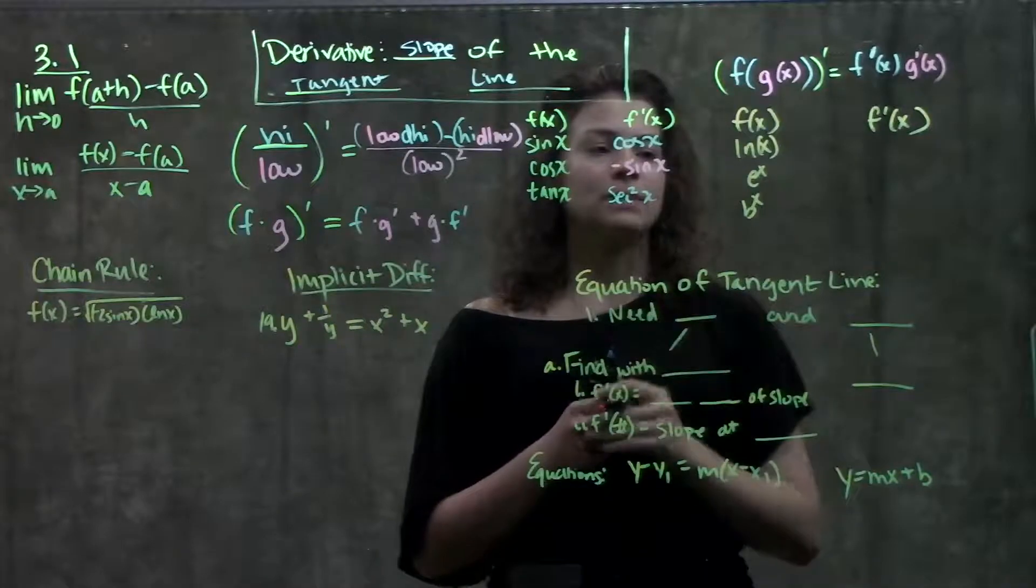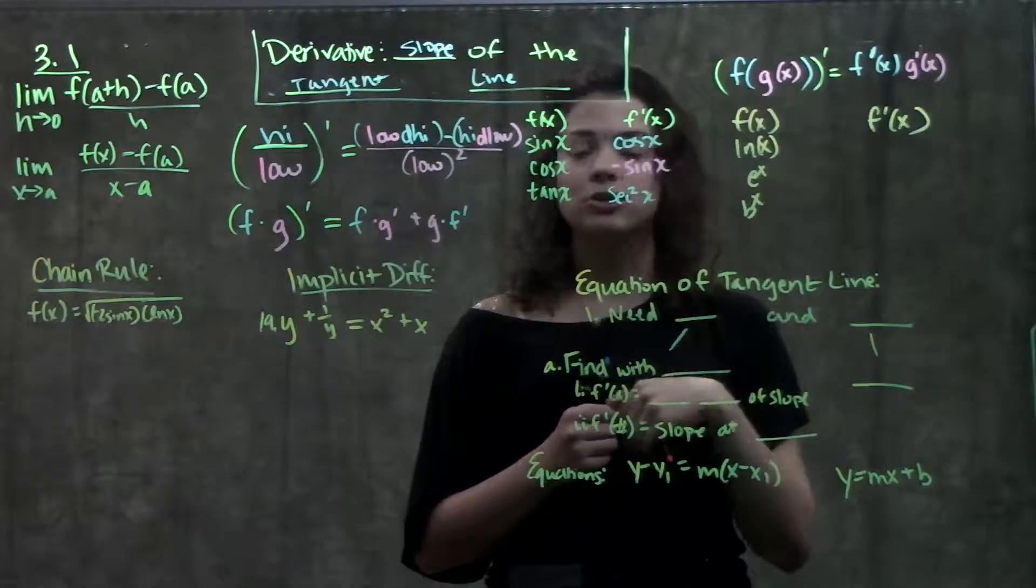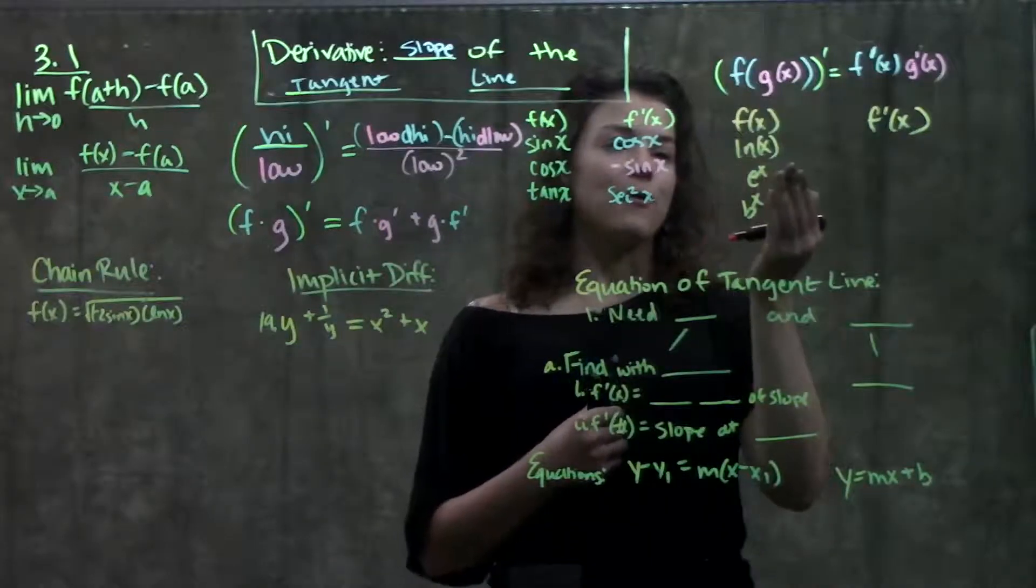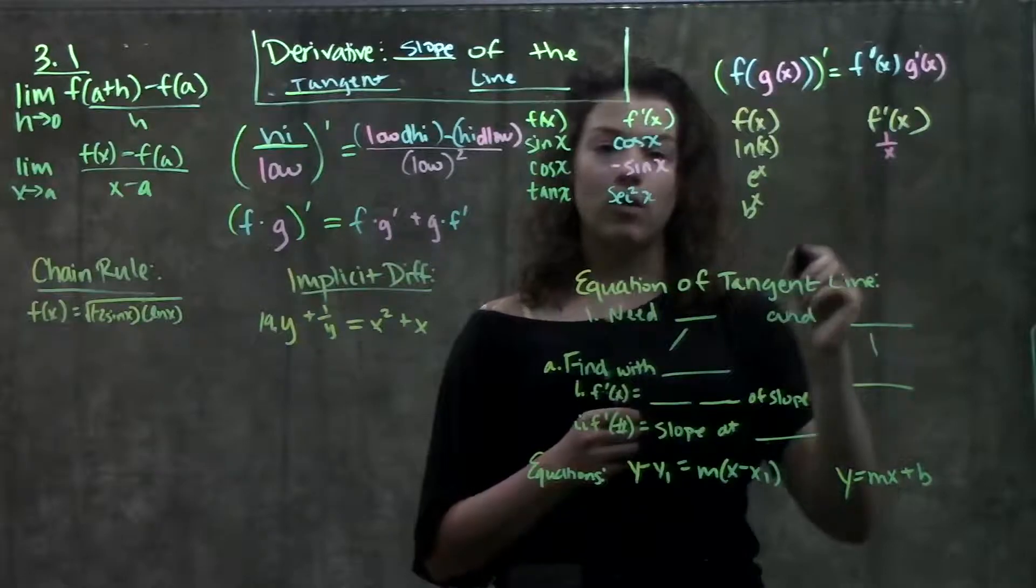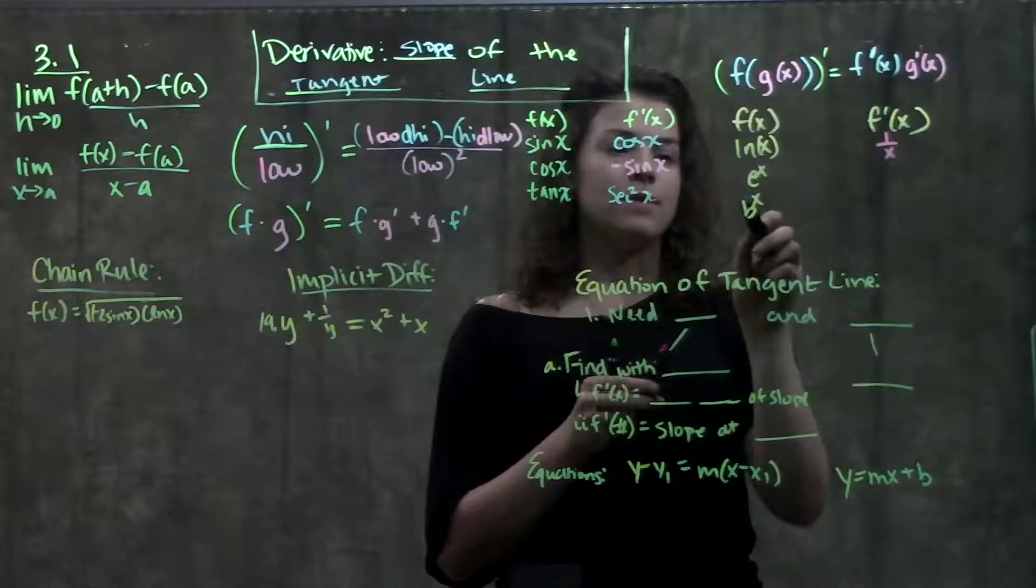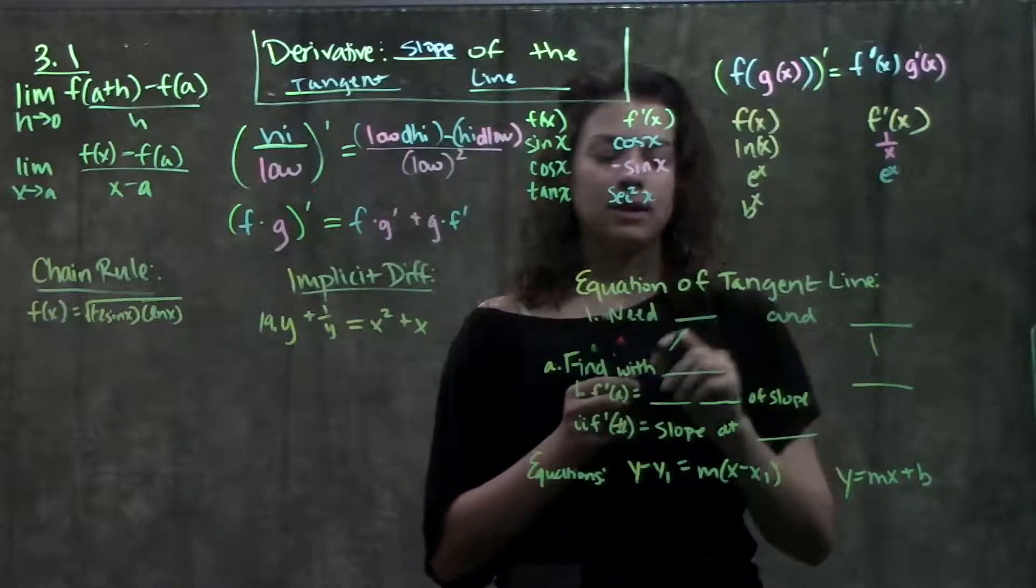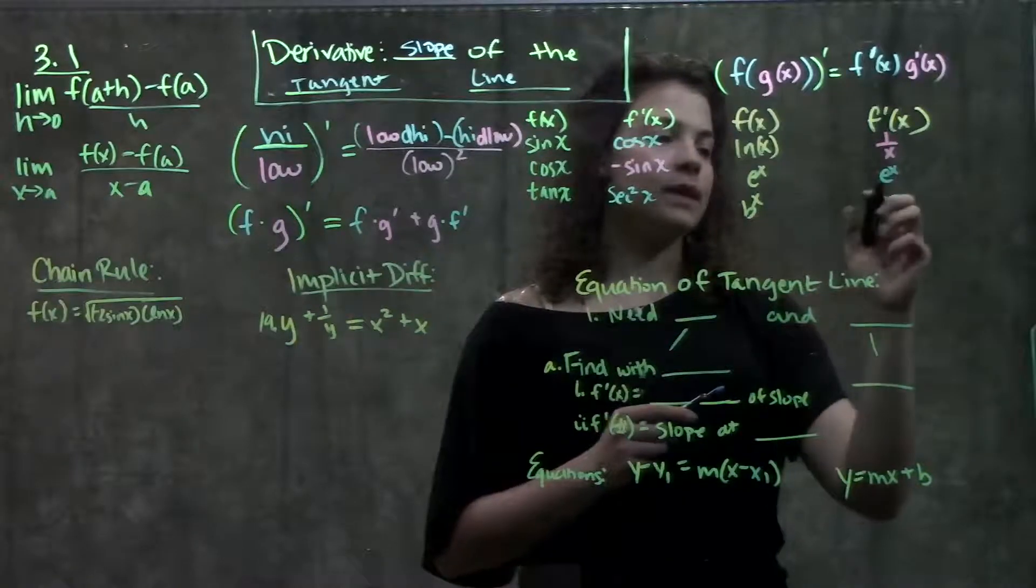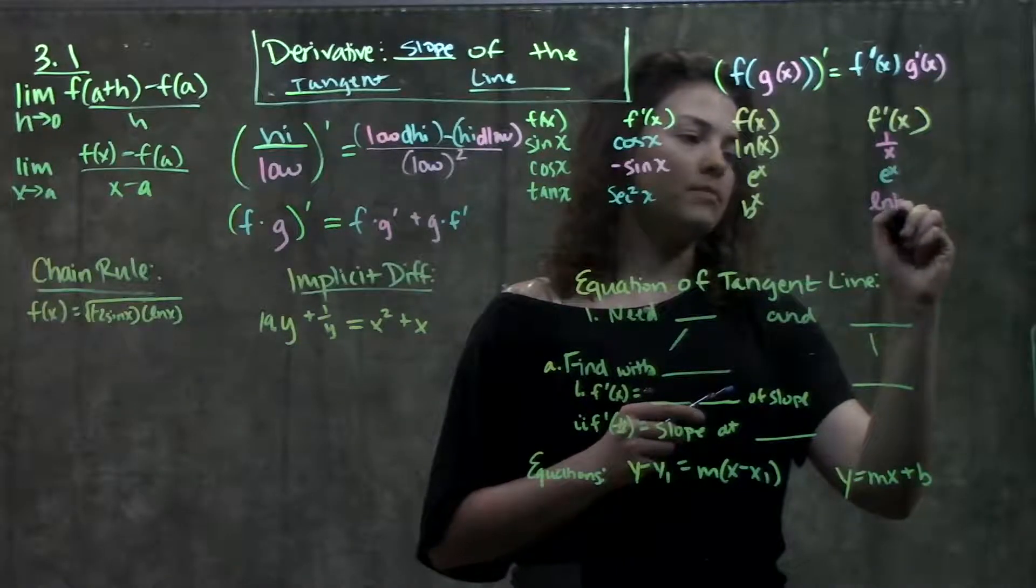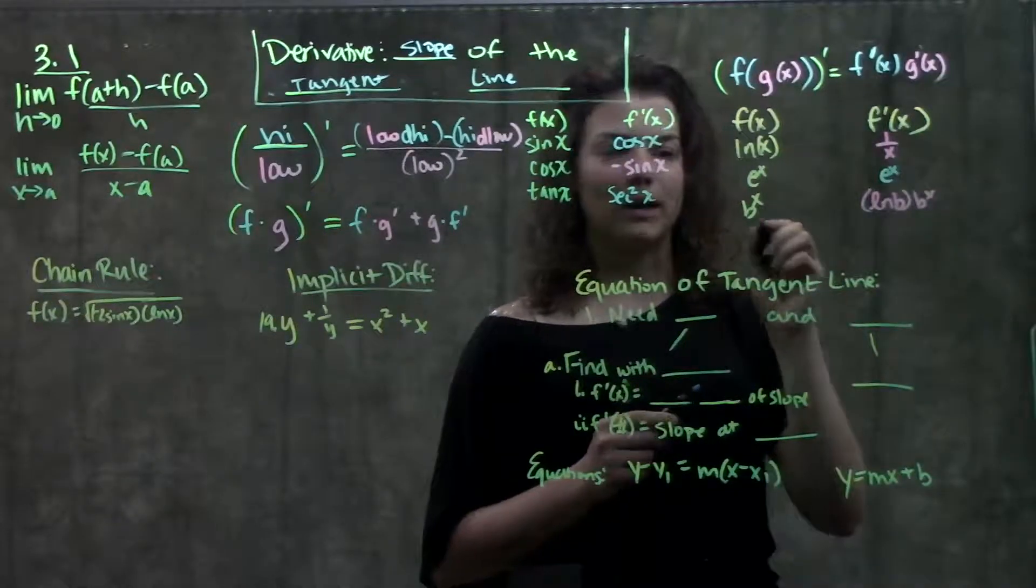In section 3.9, we learn derivatives of exponential and log functions. If we have the function ln of x, the derivative of that is just 1 over x. If we have the derivative of e to the x, it's just the same, e to the x. And if we have a function in the form b to the x, the derivative of this is just ln b, whatever that base is, times b to the x, whatever we started with.